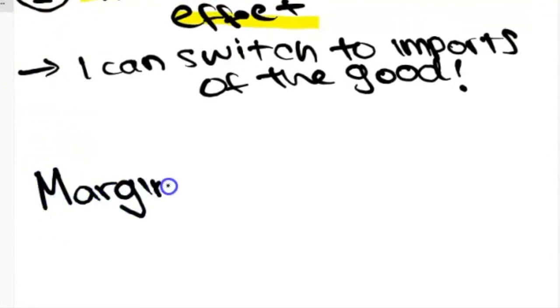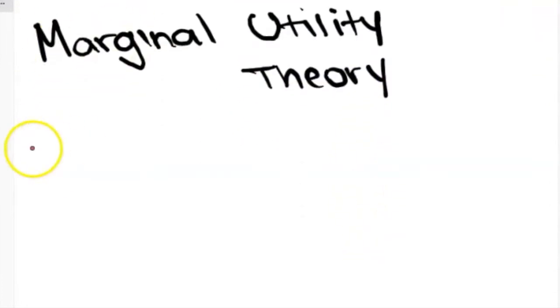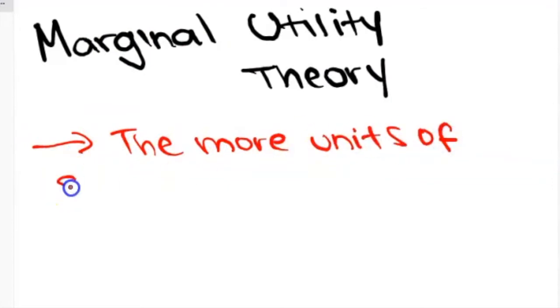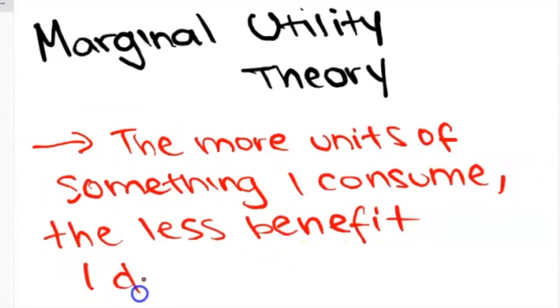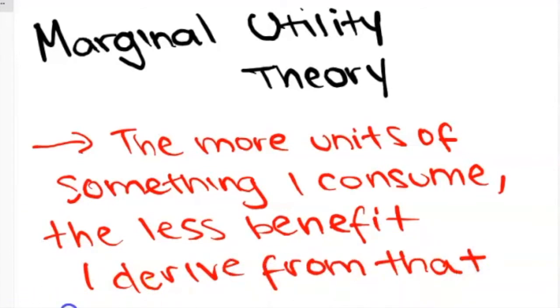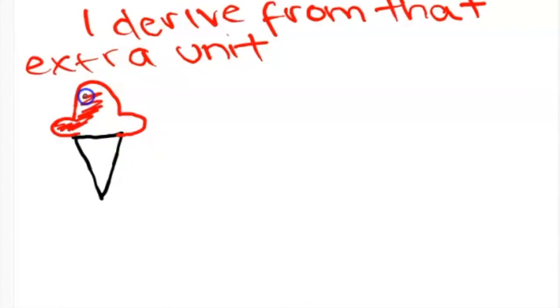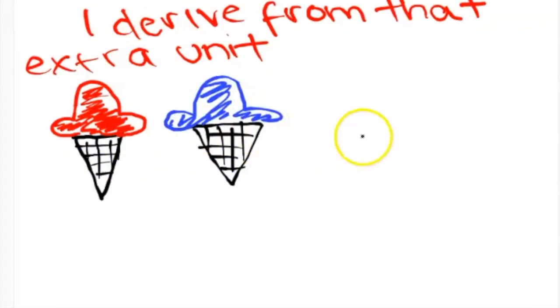Another key definition to keep in mind is marginal utility theory. Marginal utility theory says that marginal benefit falls as quantity consumed increases. If you think of a scenario where if I buy one ice cream, I get a certain amount of benefit from eating that ice cream. But by the time I get a second ice cream, the benefit that I get from that second ice cream is less.